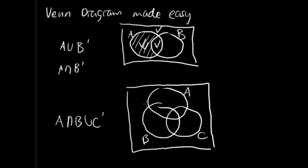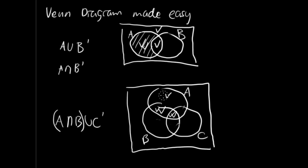We're going to start with set A, so I'm going to check these four areas. Now I'm going to check everything that's in B — so these four areas. We can see that the double-checked area is the intersection. At this point I'm going to get rid of all the single checks, because now we've identified A intersect B, so we can do the other part.